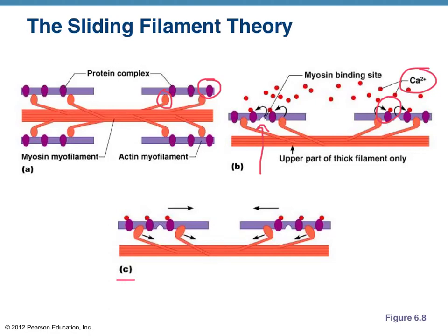In letter C, the free myosin heads — the golf club-looking things — are referred to as being cocked or set like a mousetrap. When the myosin head actually binds to the binding site, they spring, they pivot, they pull towards the middle. As you can see, the arrows in letter C show that action pulls the thin filaments past the thick ones. What that's effectively doing in a sarcomere is pulling and contracting along the entire muscle fiber. If the muscle fibers or muscle cells are contracting, then so is the entire muscle itself.